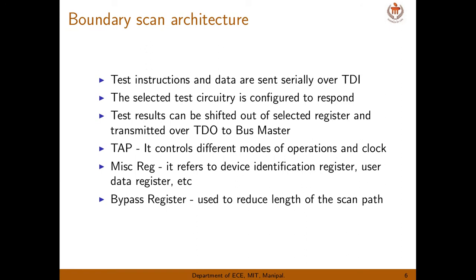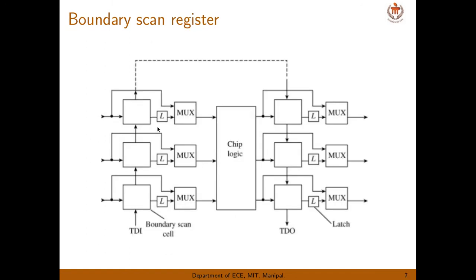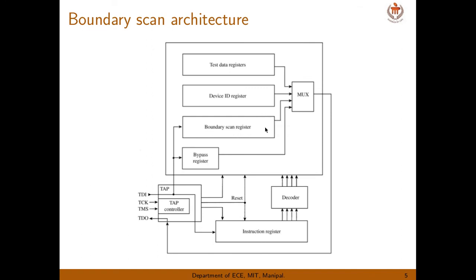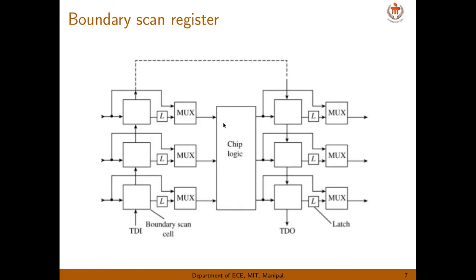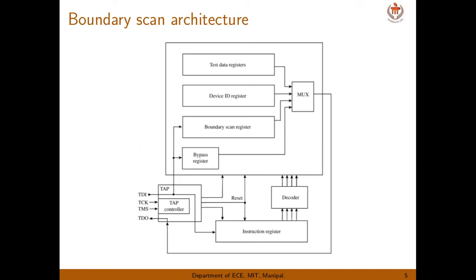The bypass register and miscellaneous registers — such as device identifying register and user data register — have already been explained. The boundary scan register consists of all the I/O cells connected with the chip logic. All boundary scan cells are connected serially, with inputs, outputs, TDI, and TDO. It represents the boundary scan cells of a chip. This has been a brief introduction to boundary scan architecture.